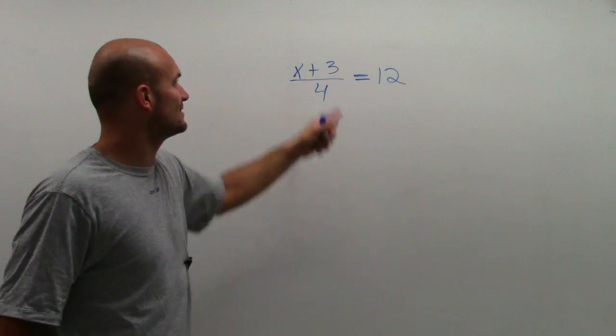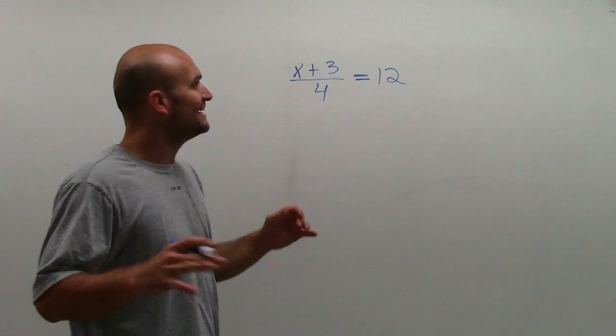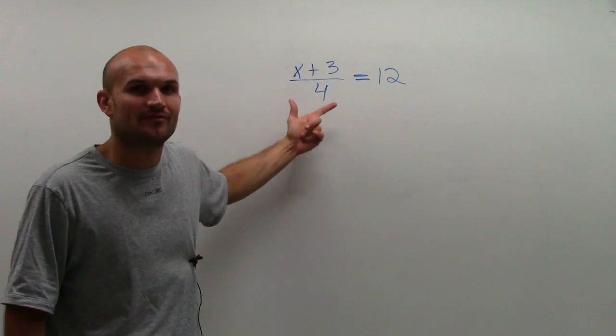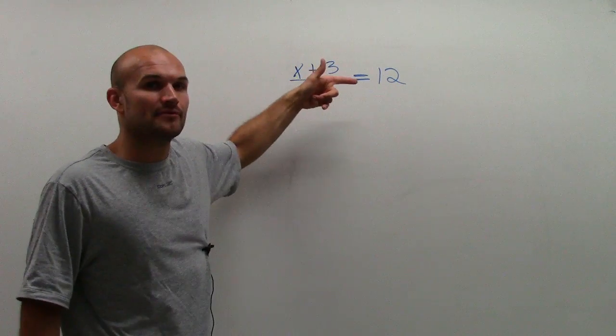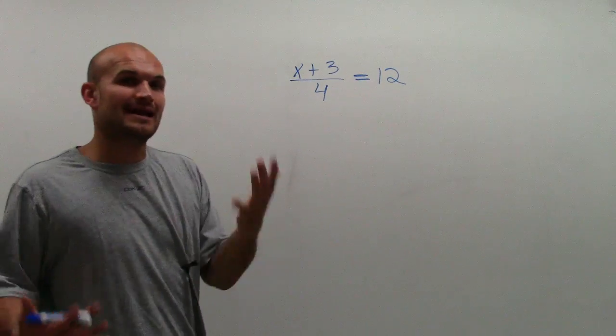It is a 3, but it's a 3 that's being divided by 4. So the value of that 3 right there is actually just not 3. It's actually 3 divided by 4. So we've got to be careful.